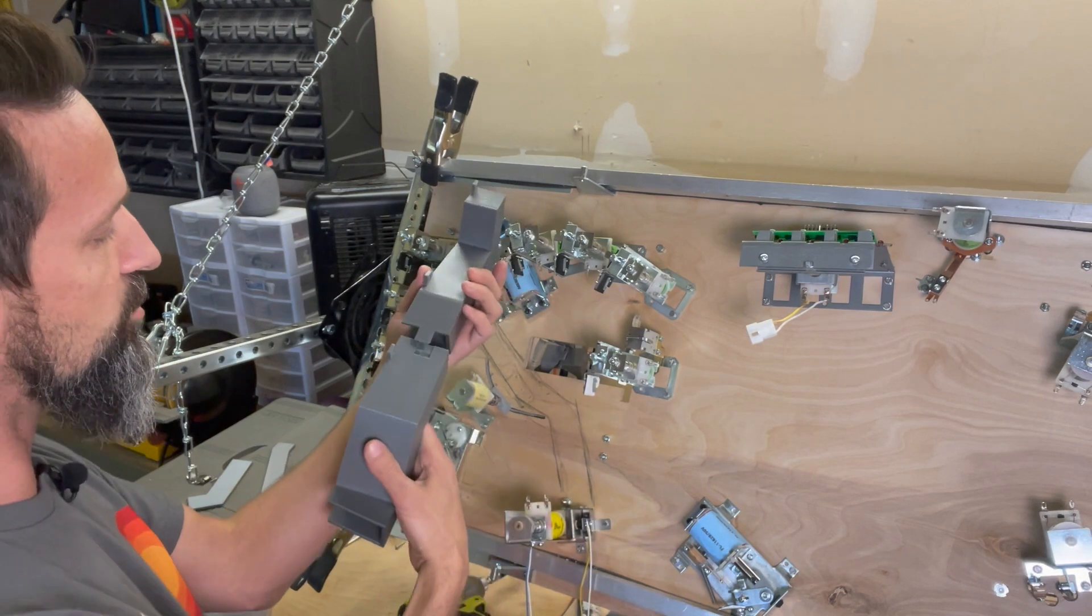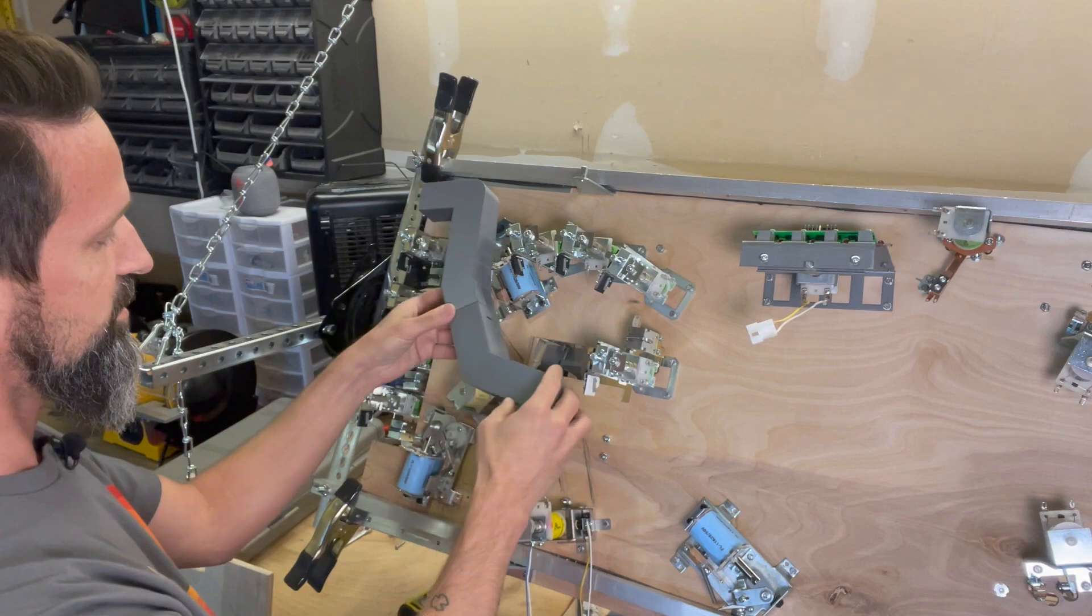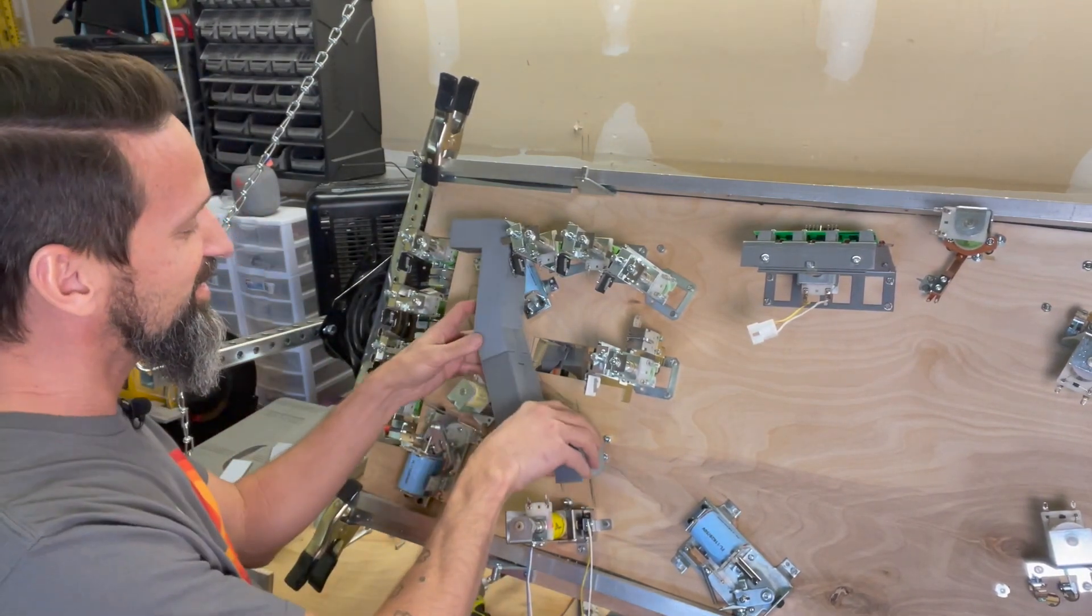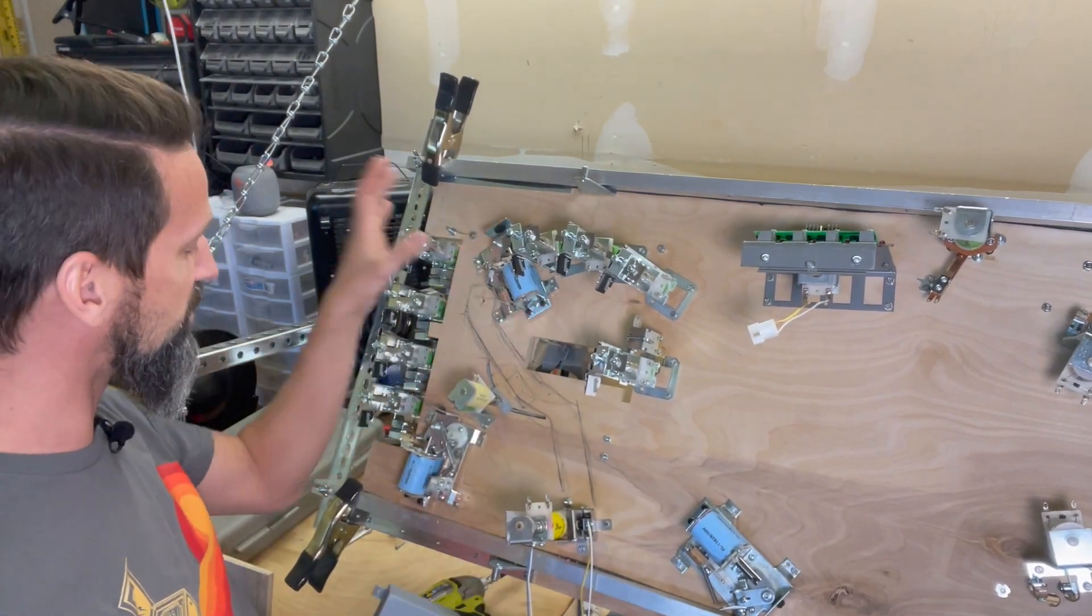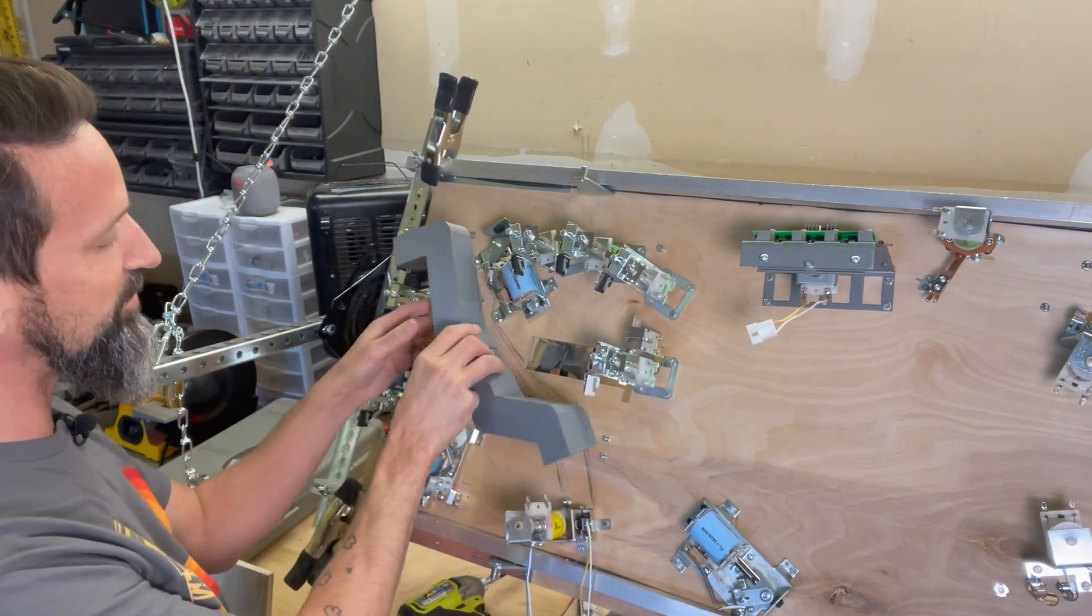This, if you recall, was our old subway that worked great for our old playfield layout, but now we have a few mechs in the way from the upper playfield, which is good. We now know exactly where our flipper mech needs to go, where the horseshoe diverter mech is going to go, the other flippers, etc. So now we can really figure out what that final path is going to be.